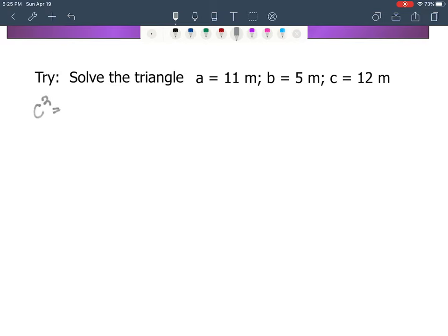So I'm going to have C squared equals A squared plus B squared minus 2 times A times B times the cosine of angle C. The reason we're finding the largest angle first is because when we use that law of sines in the next step, we want to avoid having an ambiguous case.